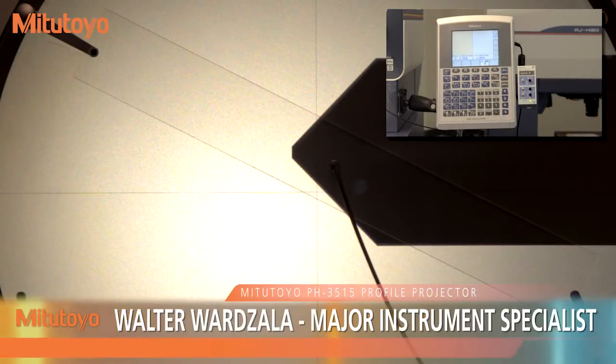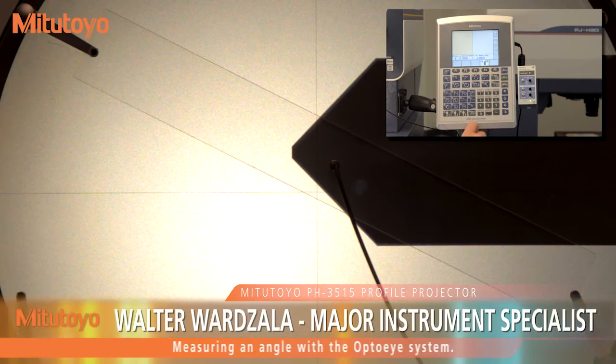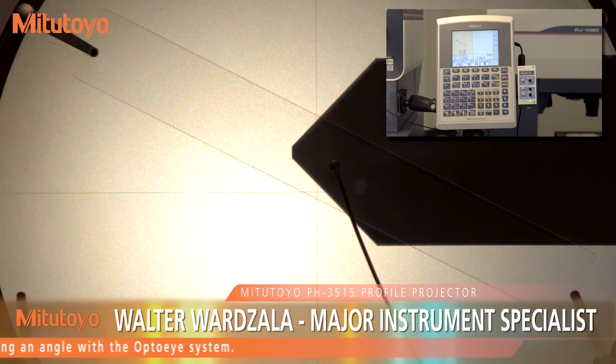In this example, the angle of this cone is measured using an automatic edge detector. Once again, the angle function is chosen from the basic feature key.